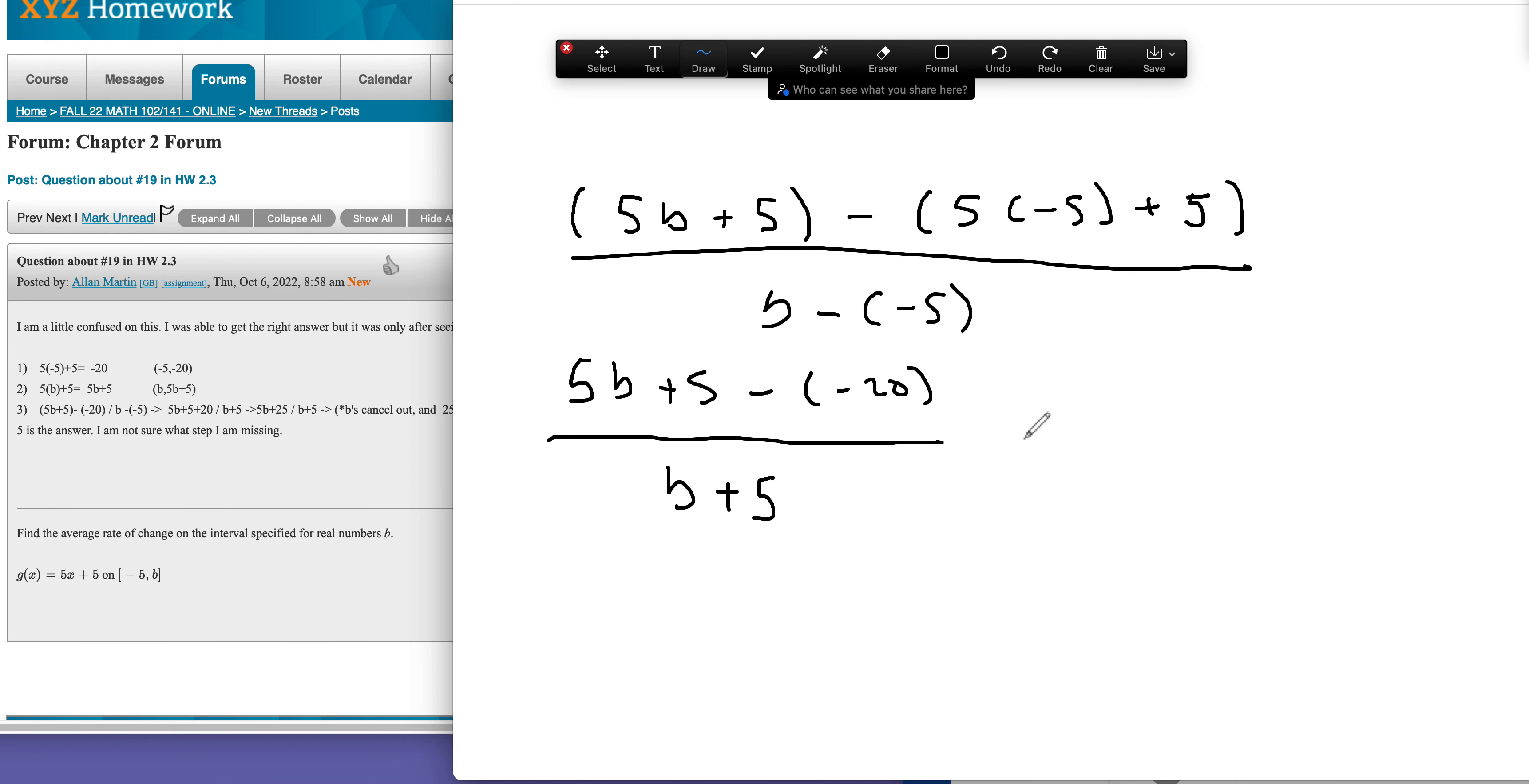And then putting this last bit together, we got 5b, so that's going to be minus and minus again, so plus 25, and then over b plus 5.